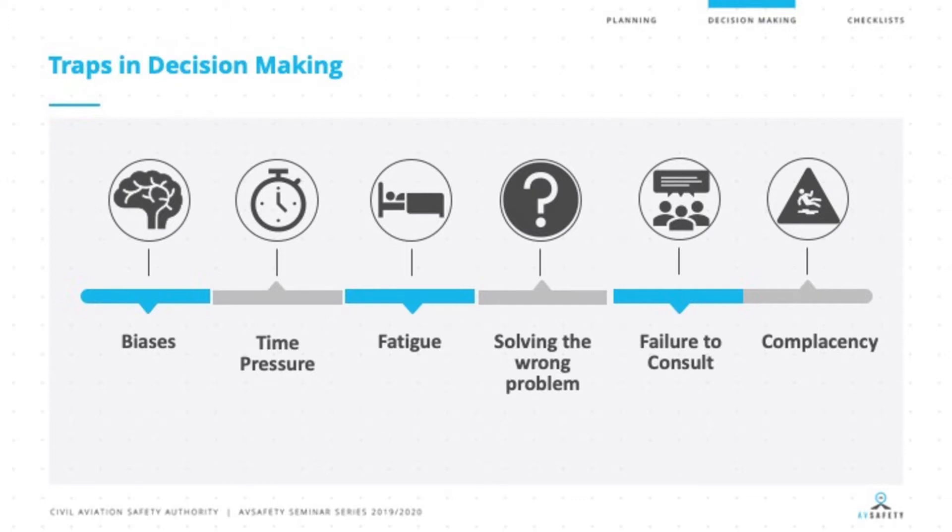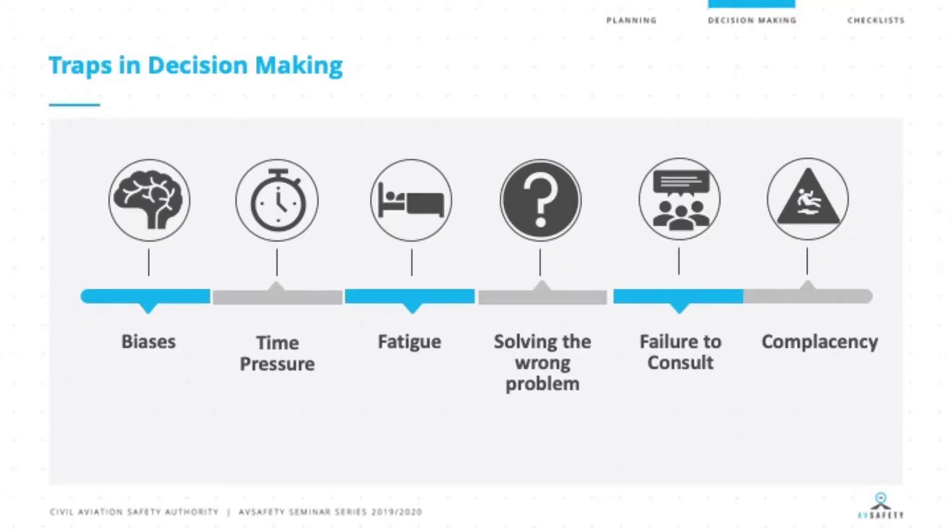Solving the wrong problem is another trap. We've seen plenty of examples over the years. In Miami, in the Everglades, during the 1970s there was an aircraft where a light bulb for indicating its undercarriage wasn't illuminating when the aircraft came into land. As a result, the flight crew ended up holding for quite a significant time, but inadvertently knocked the autopilot off and ended up crashing prior to arrival. The undercarriage wasn't actually the problem — the light bulb was blown. You can see how we can end up solving the wrong problem.